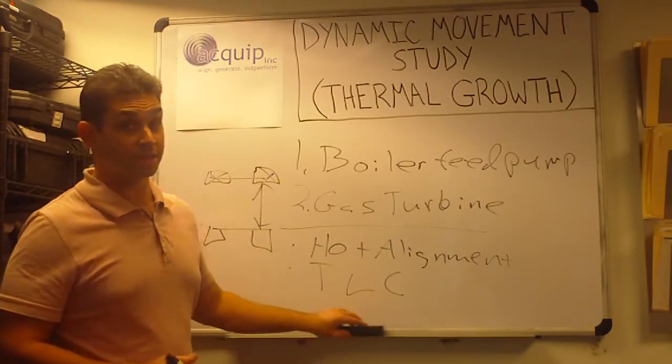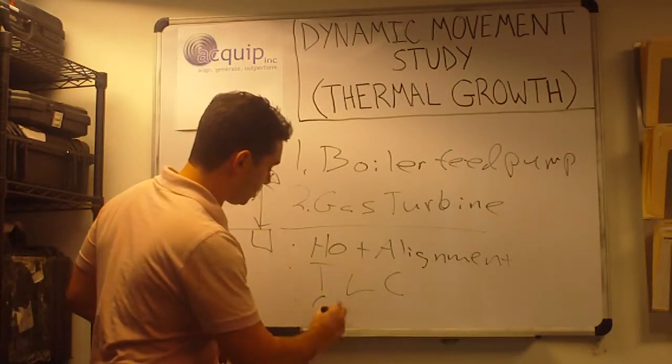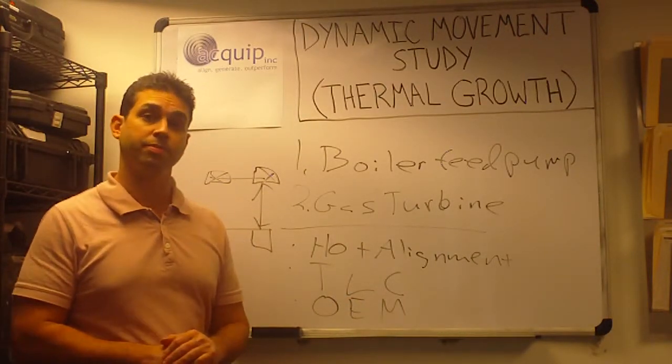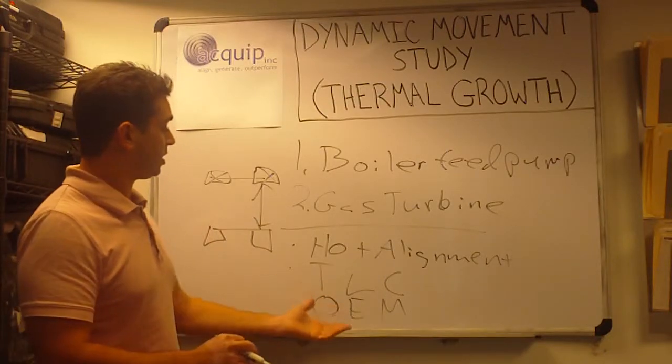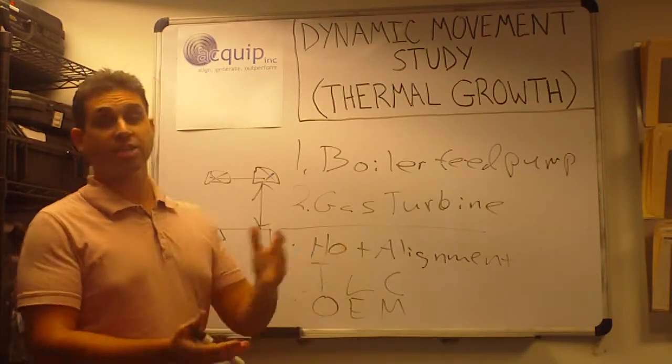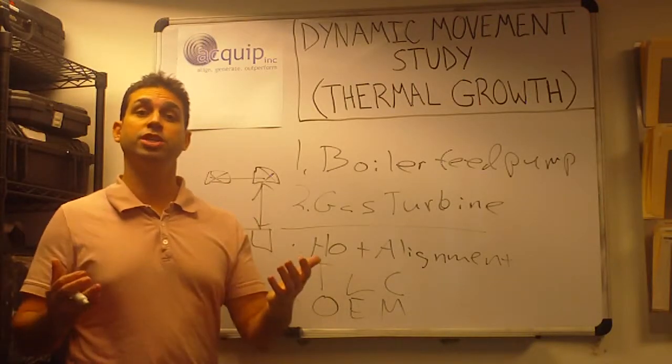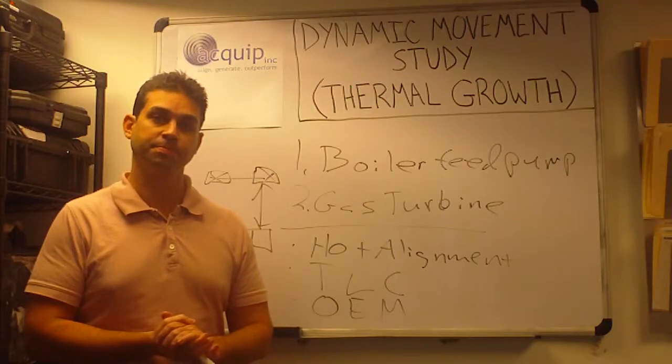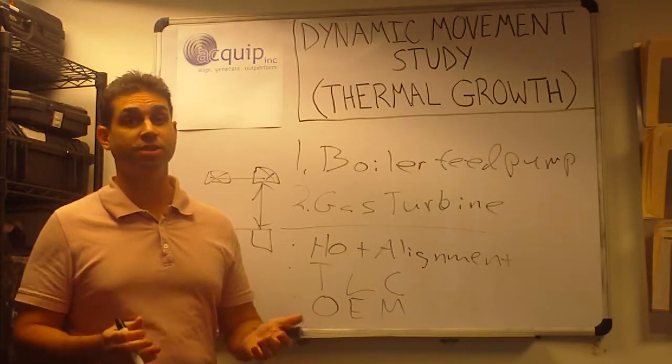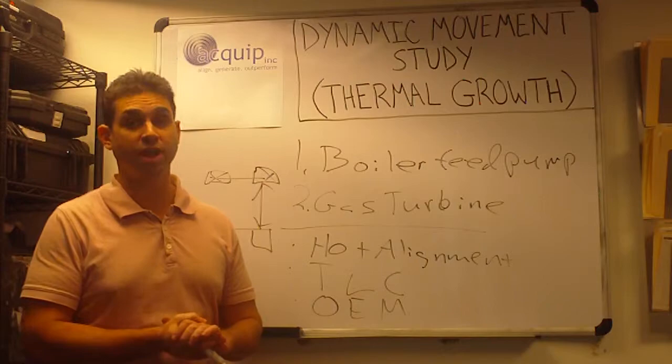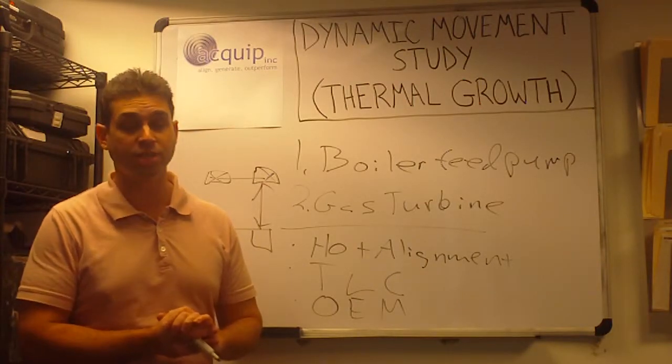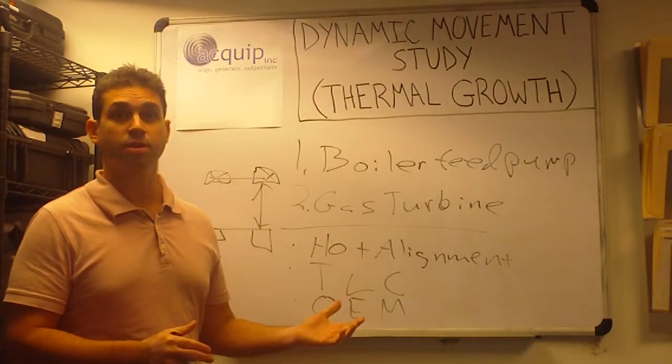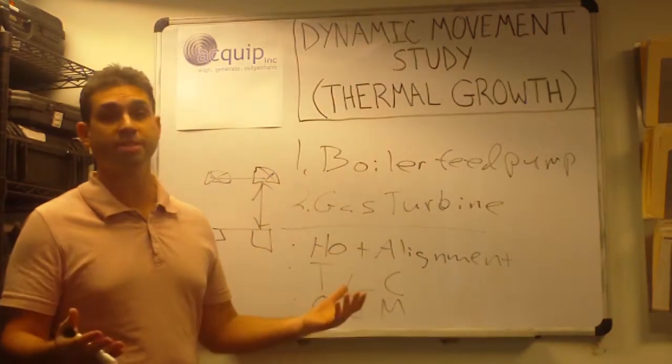The third thing that we do is a specification from the OEM. The specification given to you by the OEM is on their machine, in their facility, under their operating conditions, and in their environment, which is going to be different than your machine, in your environment, under your piping geometry, and your specifications. So, it's better than doing nothing, but it's not the best thing we can do.